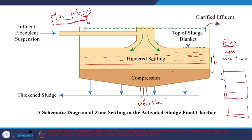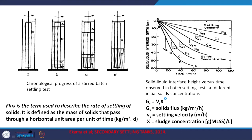There are two fluxes: one due to zone settling and one due to the underflow withdrawal. To obtain these, batch tests are conducted. You can see the settling interface coming down over time for different initial concentrations. The zone settling velocity — the rate at which this interface descends — can be plotted for different concentrations. Solid flux G equals velocity times concentration: velocity has units of L/time and concentration is mass/volume, giving mass per area per time.